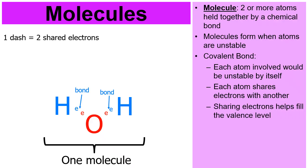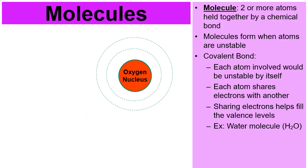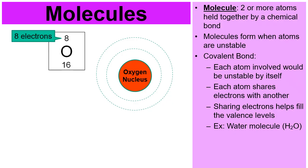Sharing the electrons is going to help fill the valence levels of not just the hydrogens, but also the oxygen. The example we're going to walk through right now is a water molecule made from two H's — H2 — and then an O. Two hydrogens and an oxygen. Here's my one oxygen.